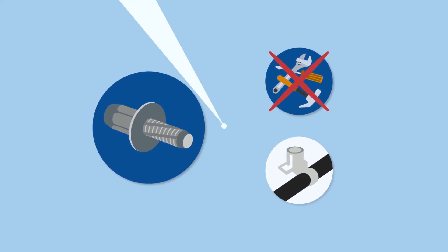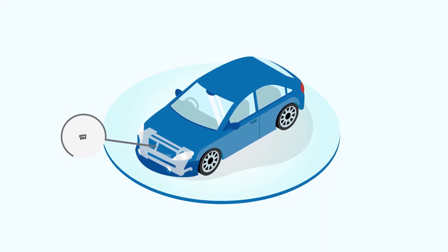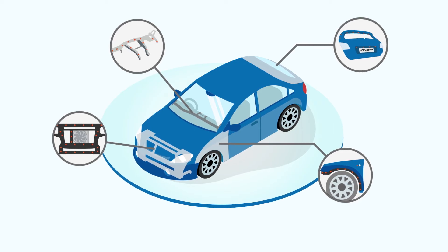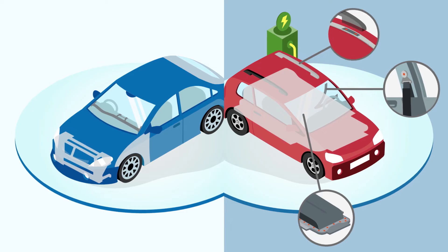Rivkul line rivet nuts and studs can be used in many application areas, for example to assemble front-end modules, fenders, dashboard cross members, or tailgates. They are also used in large numbers to assemble battery trays, roof bar carriers, or bumpers.